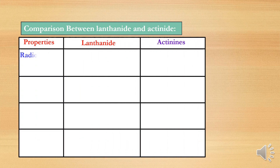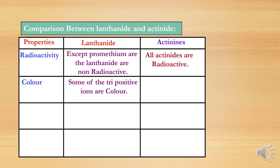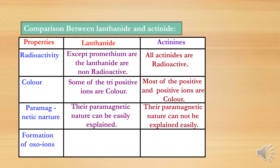Regarding radioactivity: in lanthanides, only promethium is radioactive and the remaining lanthanides are non-radioactive, whereas all actinides are radioactive — either naturally or artificially. Regarding color: some tri-positive (+3) lanthanide ions are colored, while most actinide ions across their variable oxidation states are colored. Regarding paramagnetism: lanthanide paramagnetism can be easily explained, but actinide paramagnetism cannot be explained easily. Finally, regarding the formation of oxo-ions: lanthanides do not form oxo-ions, but actinides do form oxo-ions.